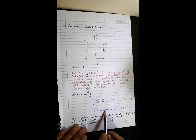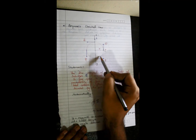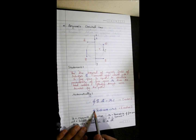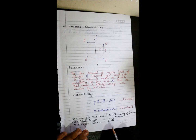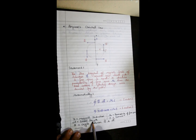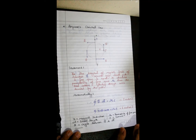From this mathematical equation, the statement is: the line integral of magnetic induction around a closed loop is always equal to the product of permeability of free space μ₀ and current I flowing through the conductor. Here B is magnetic induction, DL is small length, μ₀ is permeability of free space, I is current, and θ is the angle between B and DL. So we have completed Ampere's law.